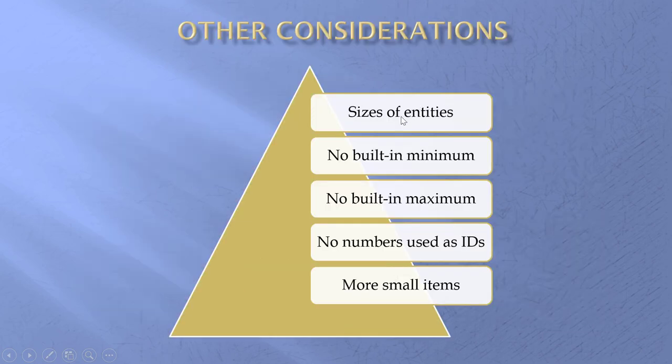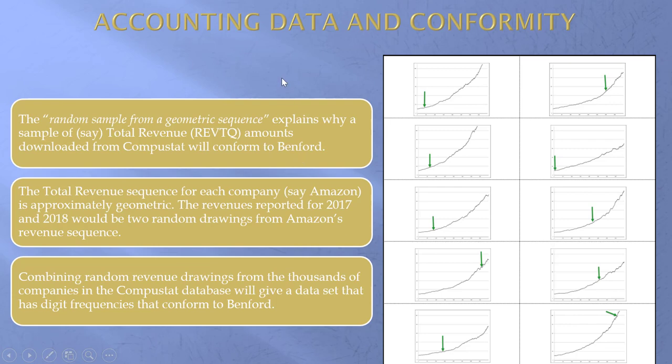Other considerations. I need my numbers to be describing size. Telephone numbers don't describe size, house addresses don't describe size, zip codes don't address size either. No built-in minimum, although zero is okay. No built-in maximum, otherwise things are going to congregate around the maximum and it'll upset my digits. No numbers used as labels, and we love to use numbers as labels. Our highways have labels, products in the supermarket have labels, that's known as the barcode. We have social security numbers and the like. I need more small items than large numbers, but these are just general considerations. The previous one is the one that really counts.